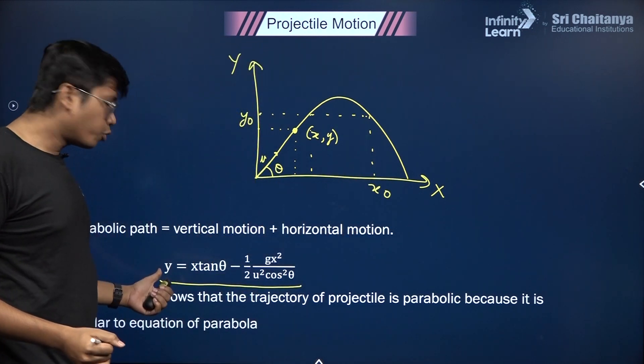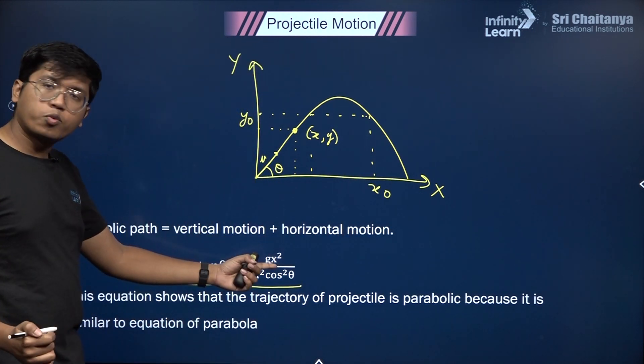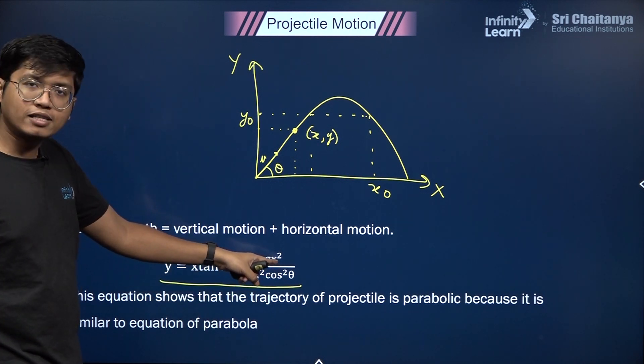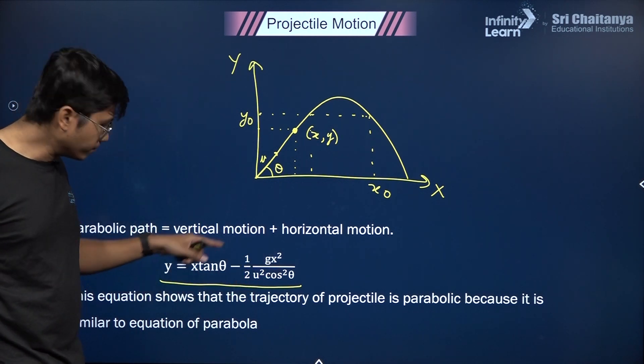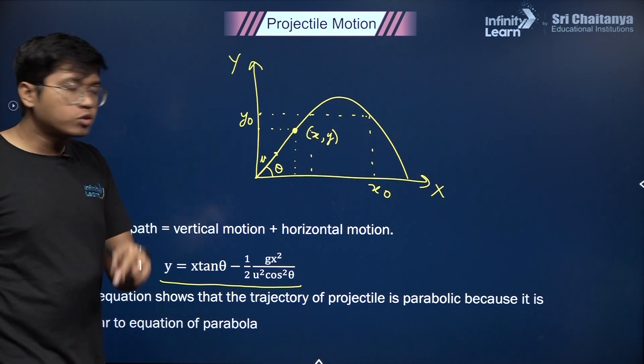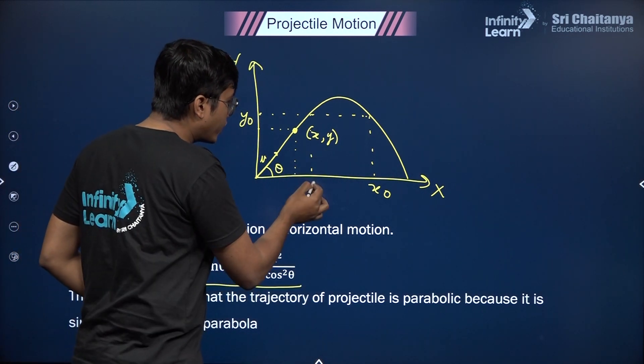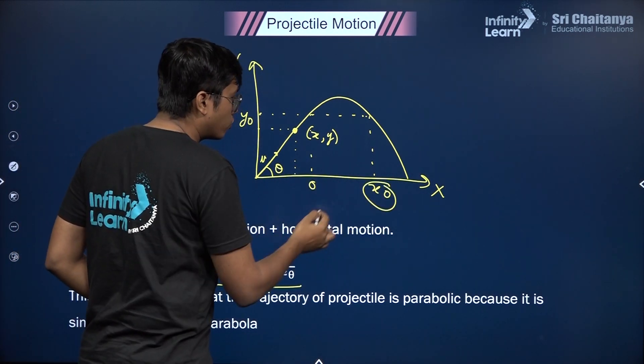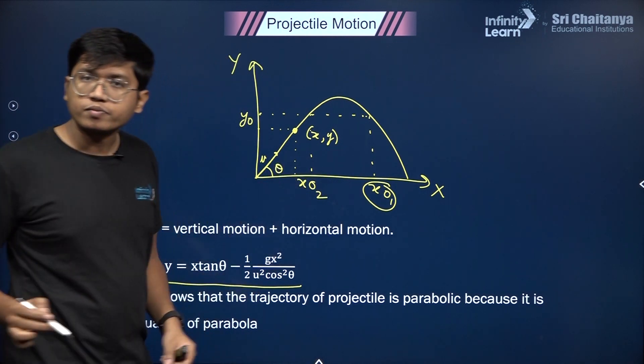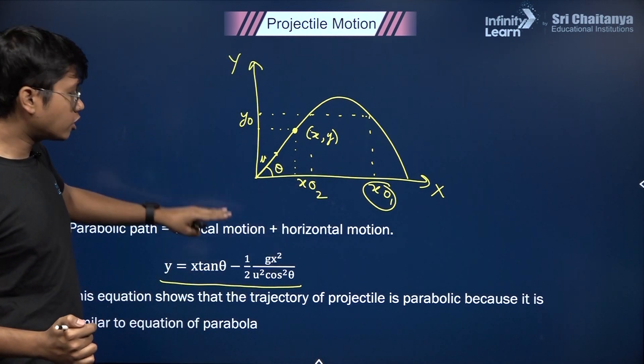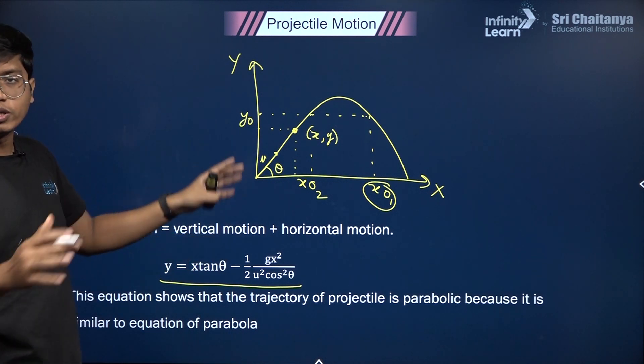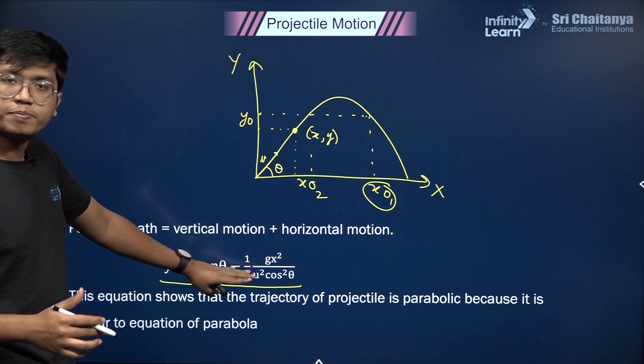The way to get that: put y₀ here, solve it, you'll get a quadratic equation of x. You'll get two values of x—one would be for this point and another would be for this point, x₀.₁ and x₀.₂. That is where the equation of trajectory is important. This will speed up the entire process.